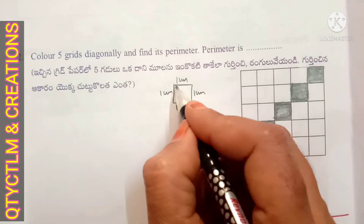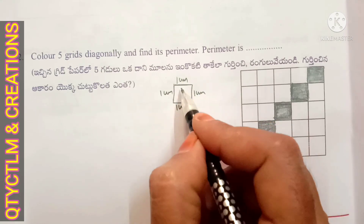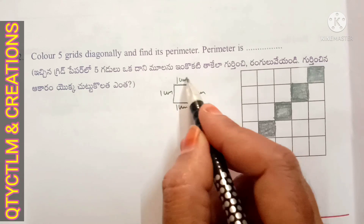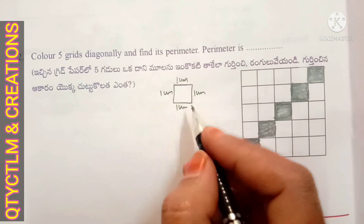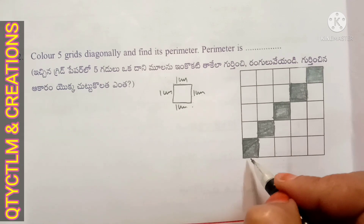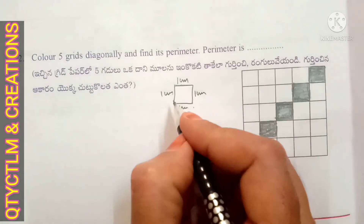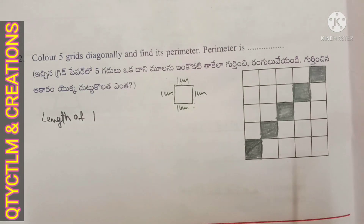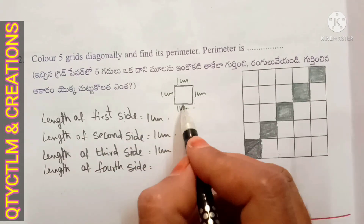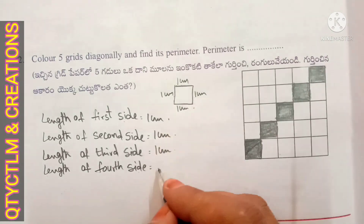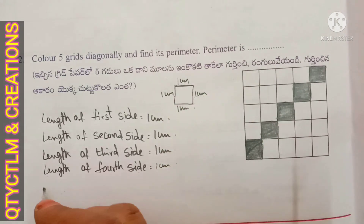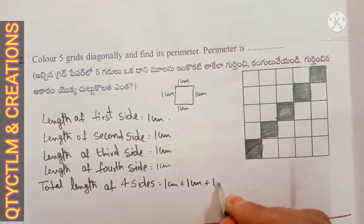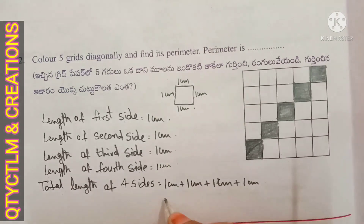Each box has a length of 1 centimeter on each side — 4 sides each containing 1 centimeter. So first side is 1 cm, second side is 1 cm, third side is 1 cm, and fourth side is 1 cm. Total: 1 plus 1 plus 1 plus 1 equals 4 centimeters. So 1 box is 4 centimeters in perimeter.